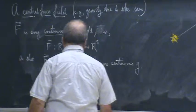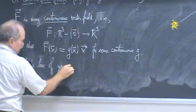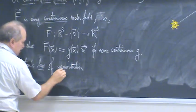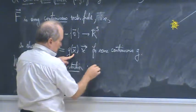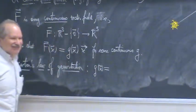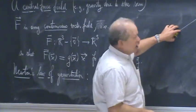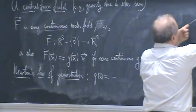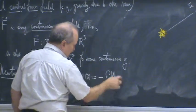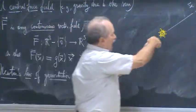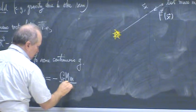Now, with gravitation — as you probably know — Newton's law of gravitation is the special case where the force involves G times M1 times M2. So Newton's law says if you have a mass here and a mass here, the gravitational attraction is some universal constant times the product of the masses, but then it's inversely proportional to the square of the distance.